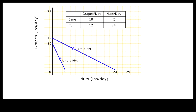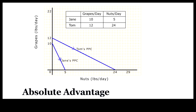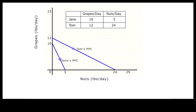Tom's production function is everywhere above Jane's, indicating that Tom has an absolute advantage over Jane in the production of both goods. But the relative slopes of the functions are different, indicating that the relative costs of production are different between Tom and Jane.